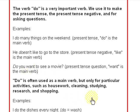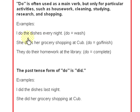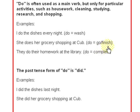'Do' is often used as a main verb, but only for particular activities such as housework, cleaning, studying, research, shopping, and so forth. For example: 'I do the dishes every night' — 'do' means wash. 'She does her grocery shopping at the club' — 'do' means go or finish. 'They do their homework at the library' — 'do' equals complete, or the act of doing the homework.